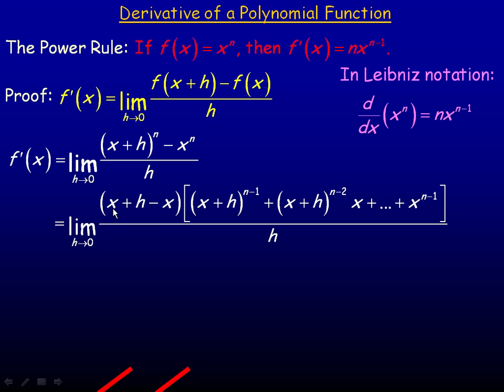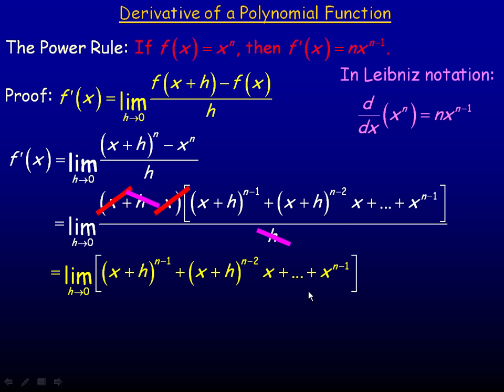Now, notice that this x and minus x, they add to 0. So actually, this whole factor is just h, so that h will divide out with this one, and so we're actually taking the limit as h tends towards 0 of just what's in these square set of brackets. So I'll write that down again. Now, if you evaluate this, and we can now, we can actually substitute 0 in place of h as h tends towards 0, then what we end up with is this.